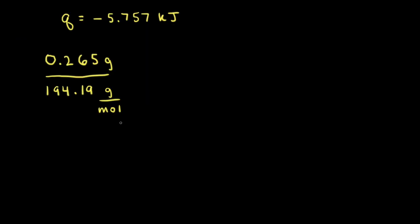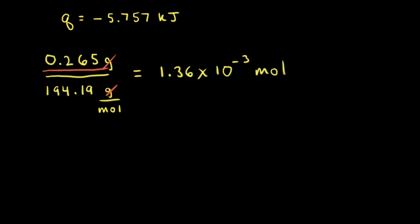Since our goal is to find the heat of combustion of caffeine in kilojoules per mole, next we need to take our grams of caffeine — 0.265 grams — and divide that by the molar mass of caffeine. Grams will cancel out and give us moles of caffeine, which works out to 1.36 times 10 to the negative third moles of caffeine.